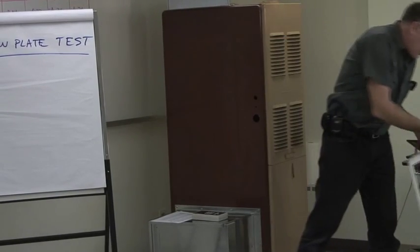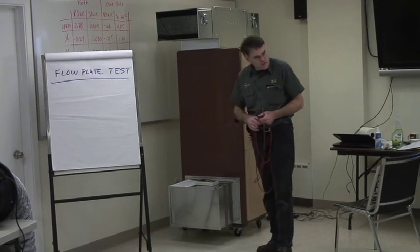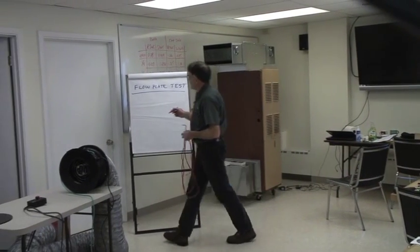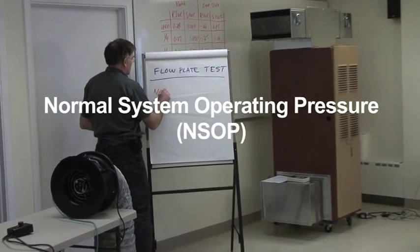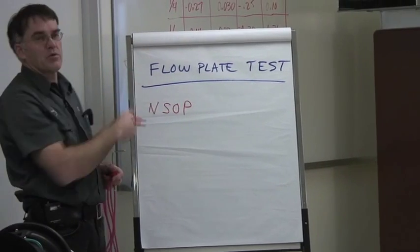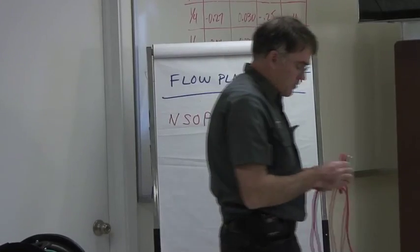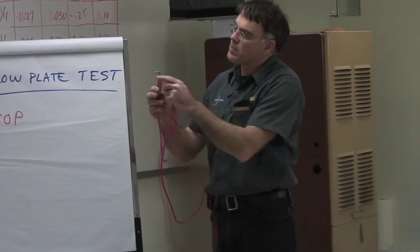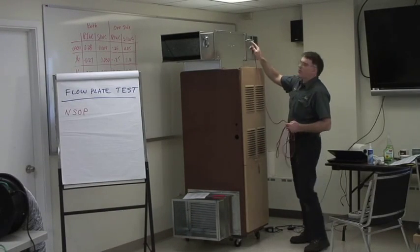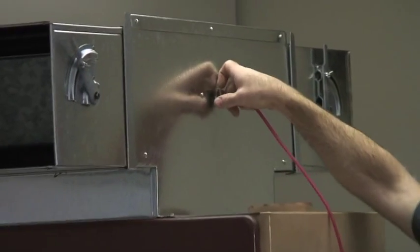There's a couple parts to this test. The first part is to come up with what we call the normal system operating pressure. We usually measure on the supply side, you could also call it supply operating pressure. For that purpose we'll use our static pressure tap. It has little holes on the side, so we're going to place our static pressure tap up in our supply plenum to get a normal system operating pressure.